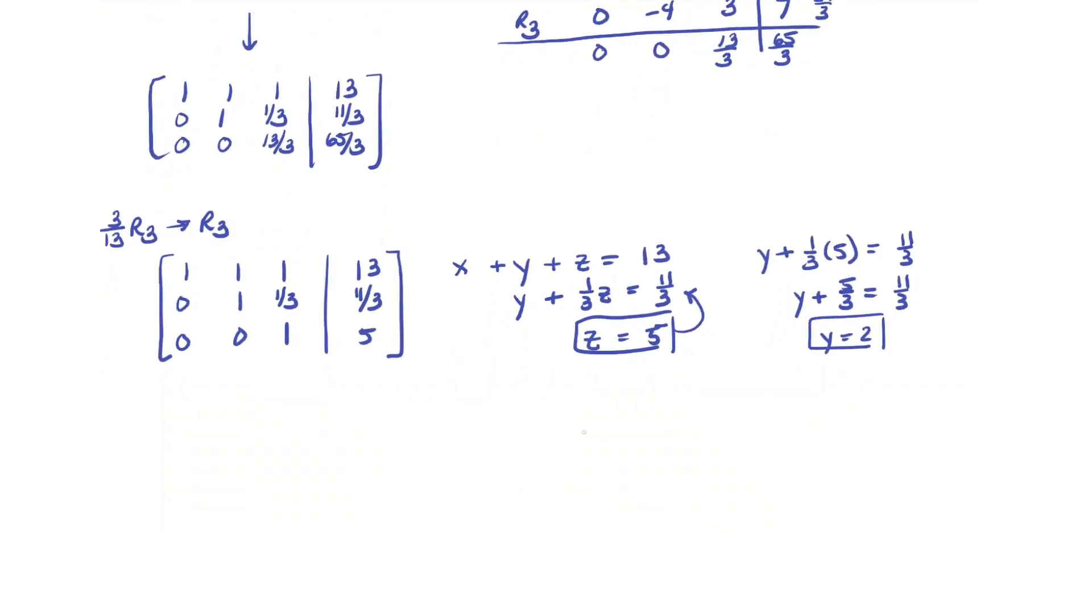And now we have x plus y plus z equals 13. So you have x plus 2 plus 5 equals 13. That's x plus 7 equals 13, which means x equals 6. So there's our solution. If we write it in ordered pair form, that is (6, 2, 5). And there is our solution to this system using Gaussian elimination.